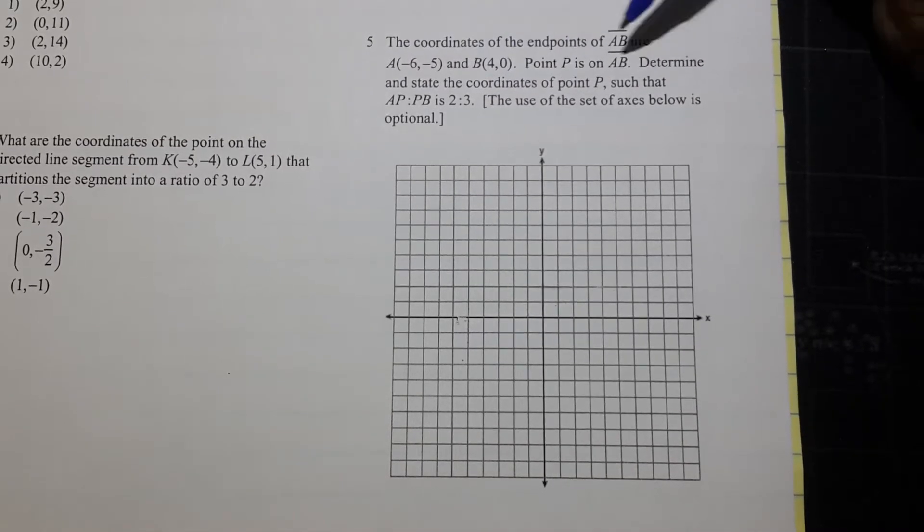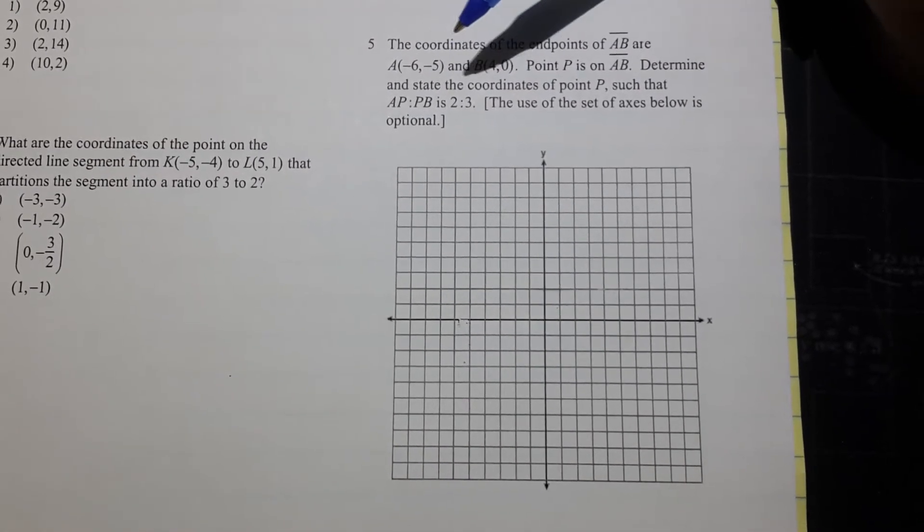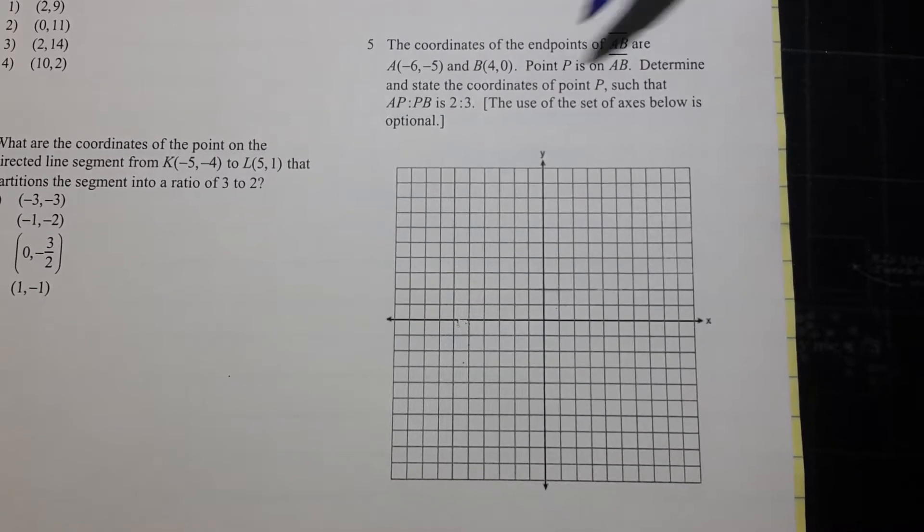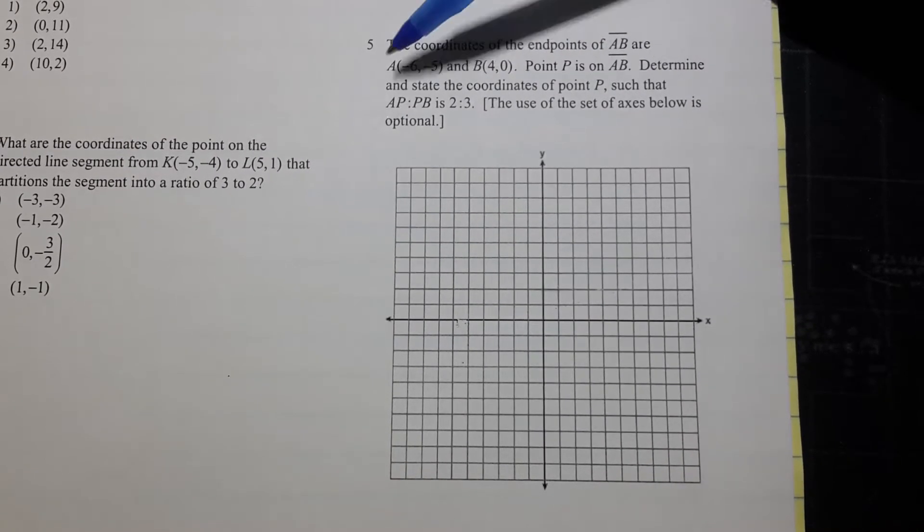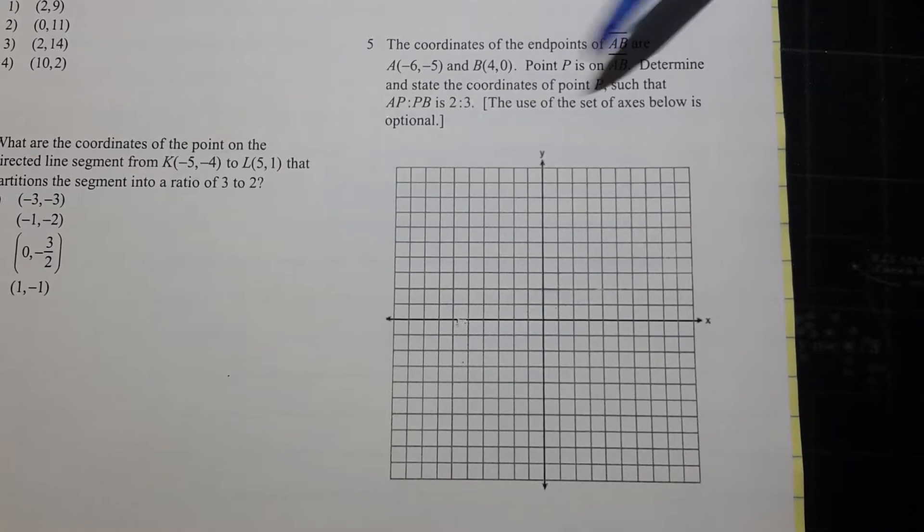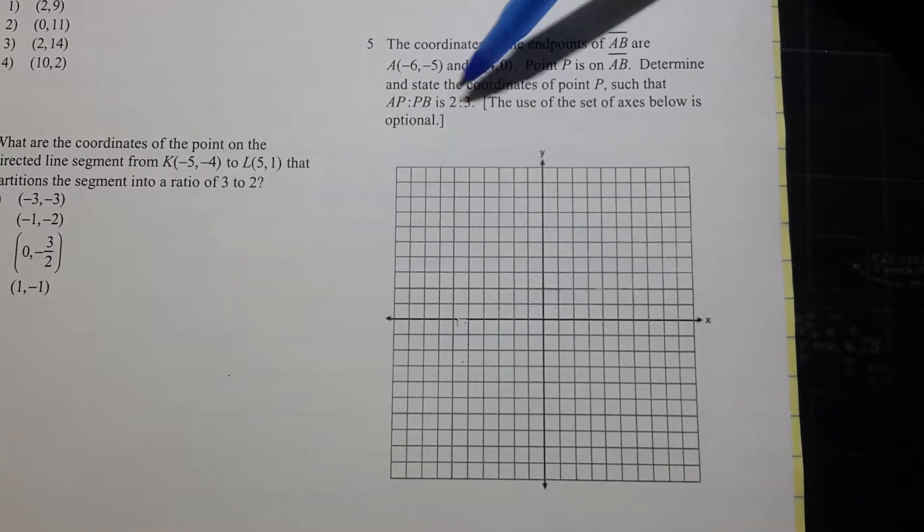The coordinates of the endpoints of AB are A negative 6, negative 5, and B 4, 0. Point P is on AB. Determine and state the coordinates of point P such that AP to PB is 2 to 3.